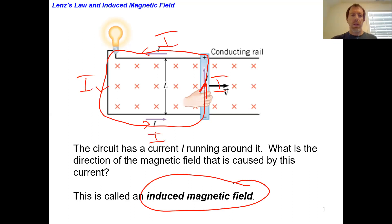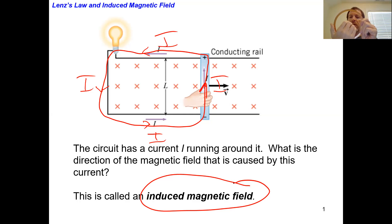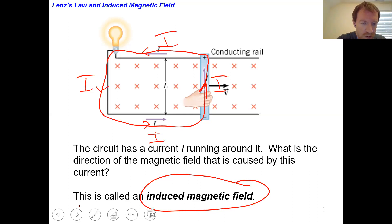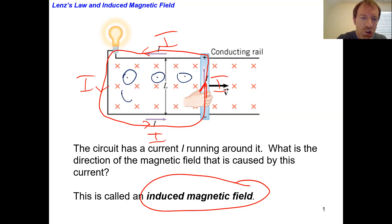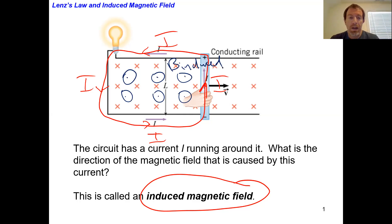Using the right-hand rule — my current is running around counterclockwise. If I put my thumb in the direction of the current and leave my fingers in the vicinity of the loop, my fingers are pointing away from the screen. So the direction of the induced magnetic field is out of the page. It just so happens that it's in the opposite direction of the original magnetic field, but that's not always going to be the case.